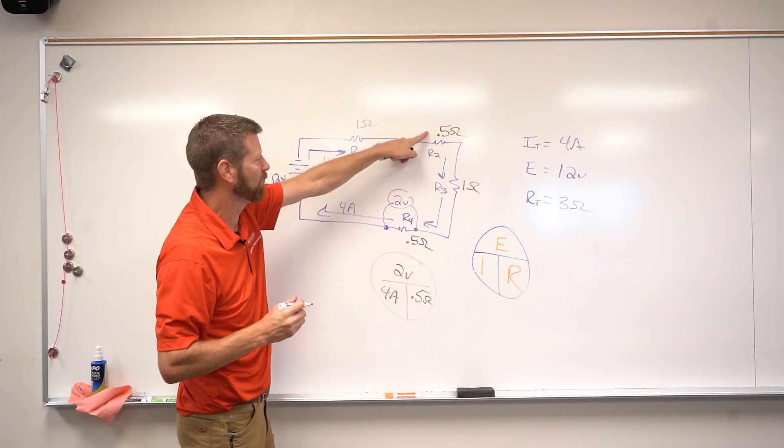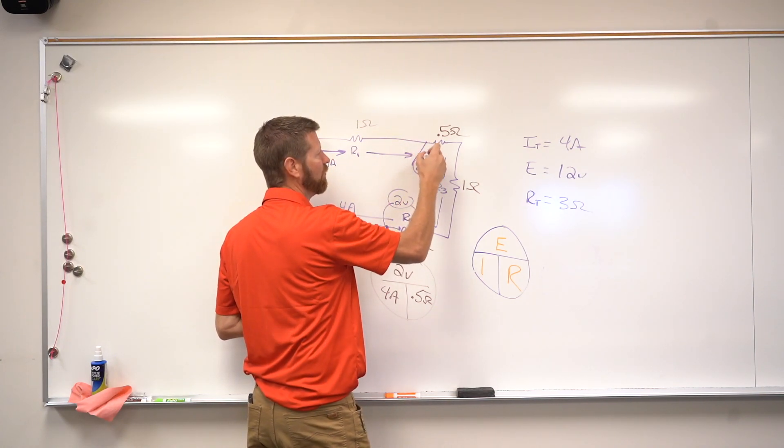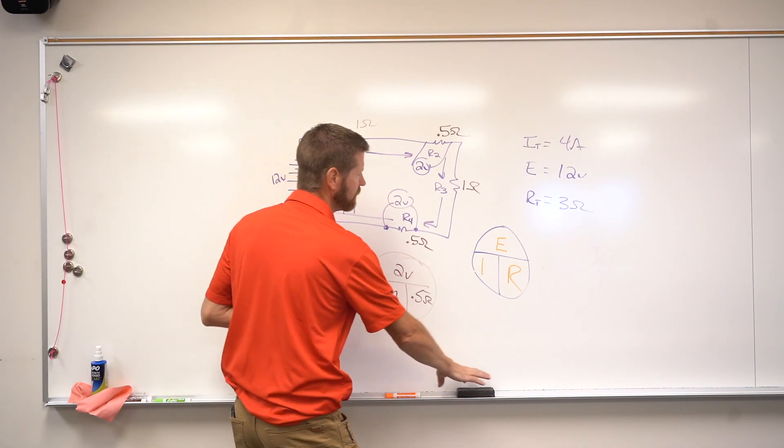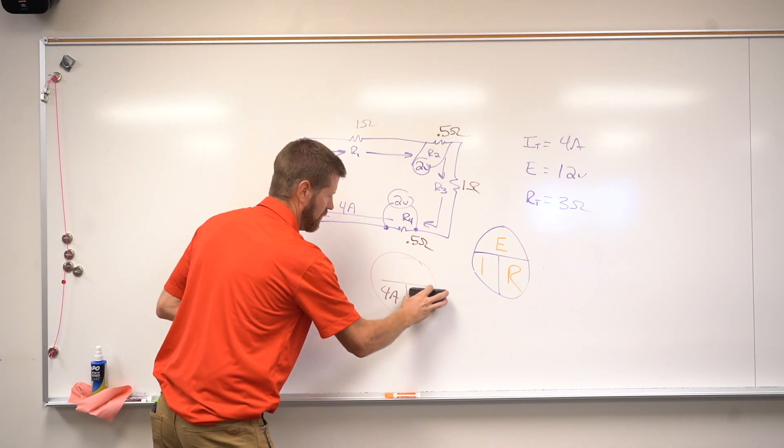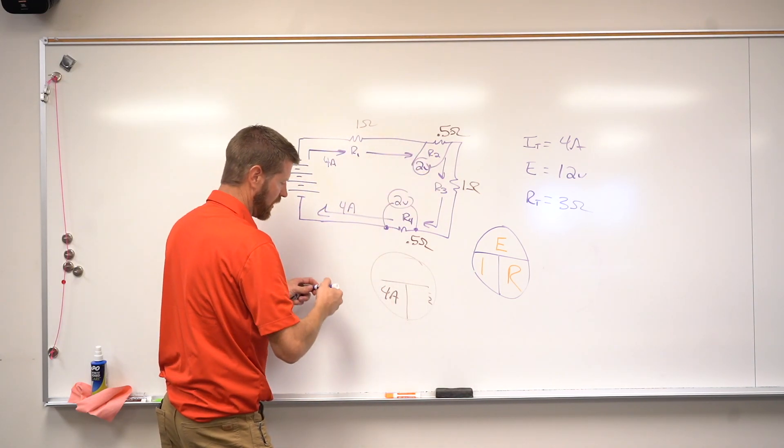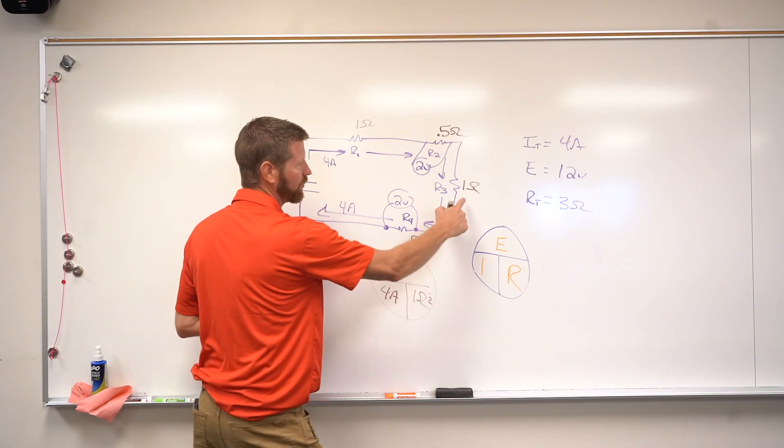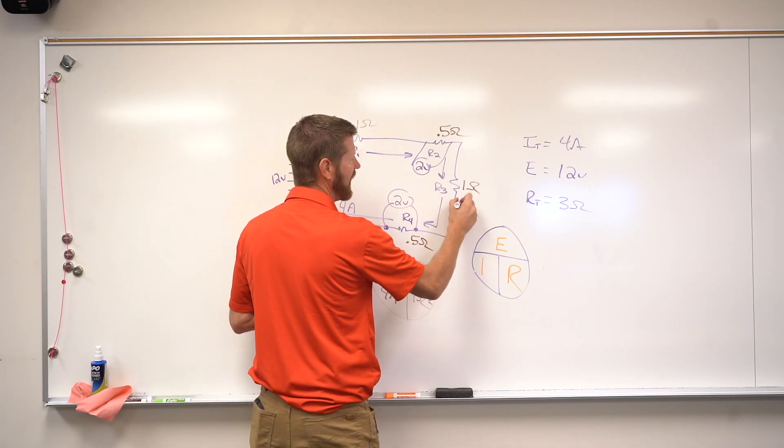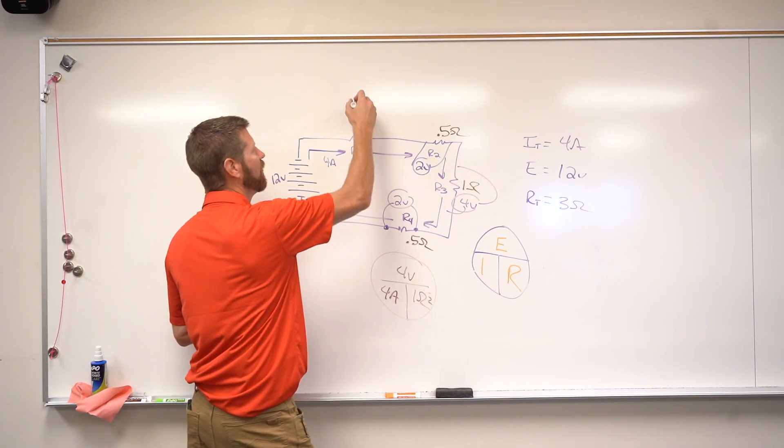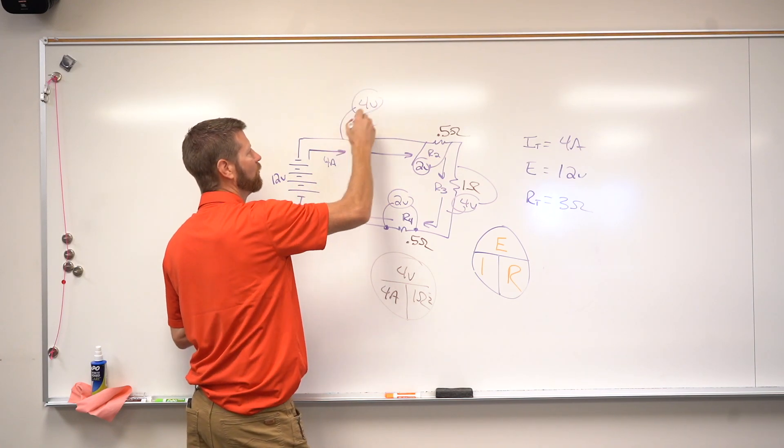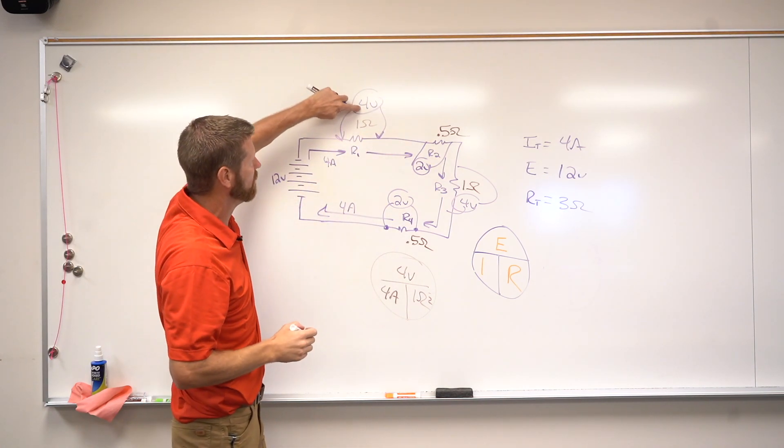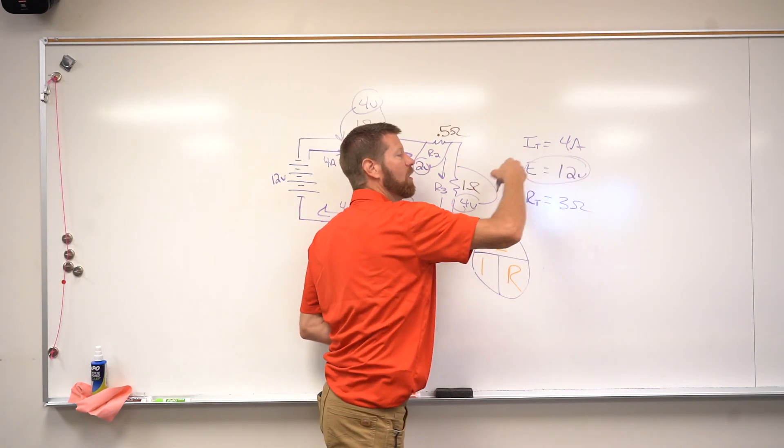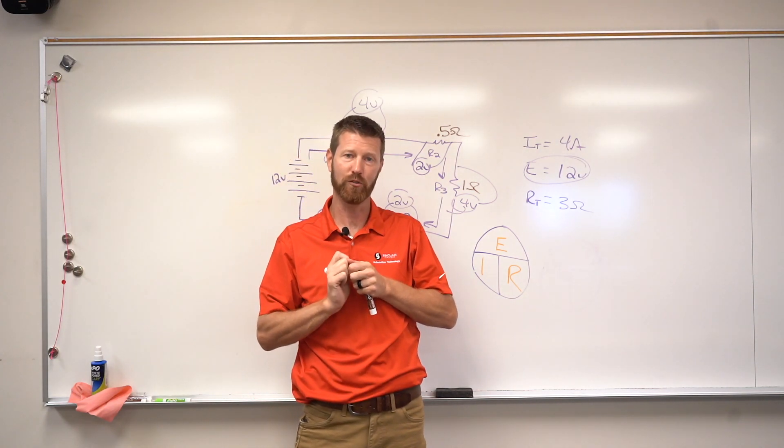That means that this resistor consumes 2 volts. Well if this is a half ohm resistor, that one consumes 2 volts. Then if we do the same thing for these, the amperage stays the same, series circuit. But now I'm going to put in 1 ohm because we're using resistor 3. So 4 times 1 is 4 volts. So that means this has a 4 volt drop. The other 1 ohm has a 4 volt drop. Now if I go back and look at my voltage drop, 4 plus 2 plus 4 plus 2. If I add all of that up, what does that equal? It equals our source or our supply voltage.